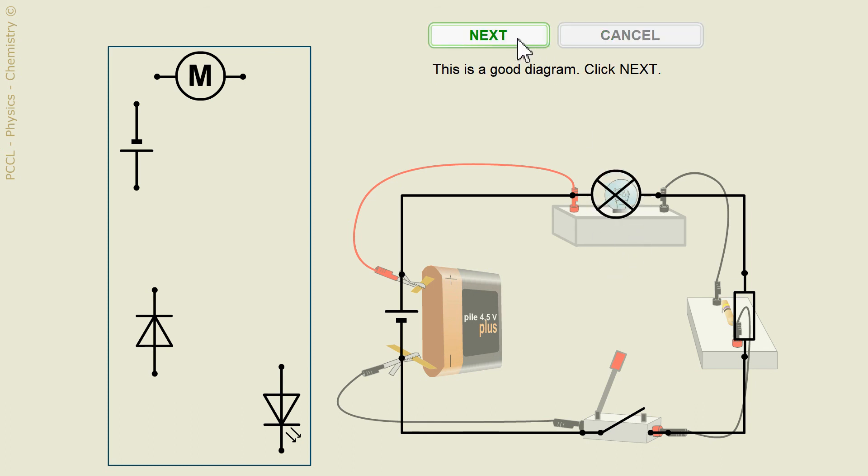You see the diagram. When you have a loop, a single loop, like that, it looks like a rectangle. The wires form a rectangle.